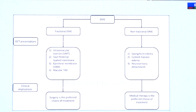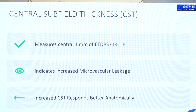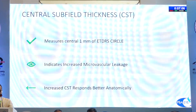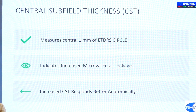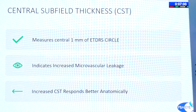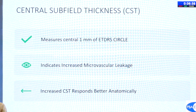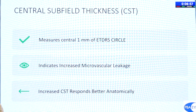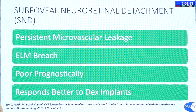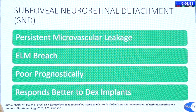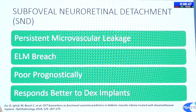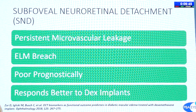The first and most commonly used biomarker is central subfield thickness (CST) — the measured central 1 millimeter of the ETDRS circle — which indicates increased microvascular leakage. Increased CST response correlates better anatomically. There is also subfoveal neuroretinal detachment: persistent microvascular leakage causes external limiting membrane breach, which carries a poor prognosis but responds better to dexamethasone implants.